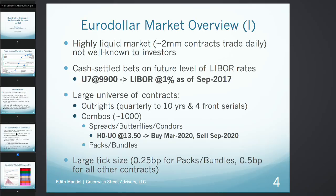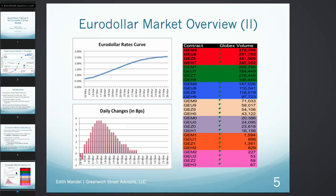Speaking of definitions: what is a euro-dollar future? For instance, U7 at $99 is a cash-settled futures contract on the future level of LIBOR, implying LIBOR at 1% as of September 2017. The universe of contracts is very large — there are 10 years of quarterly contracts, four-month series, and lots of combination trades — roughly 1,000, varying day to day. The combinations include calendar spreads like H0/U0, butterflies which are 1 minus 2 plus 1, and packs and bundles.